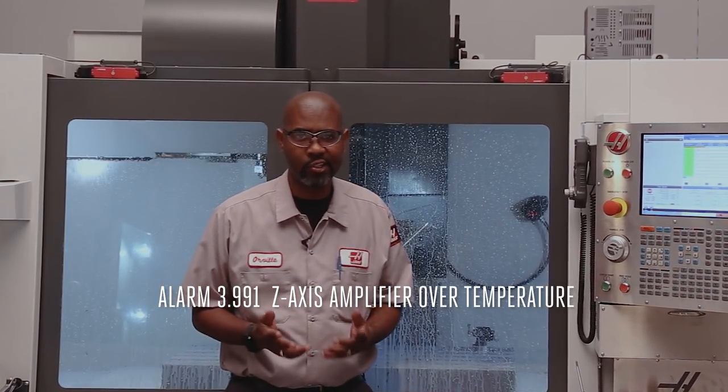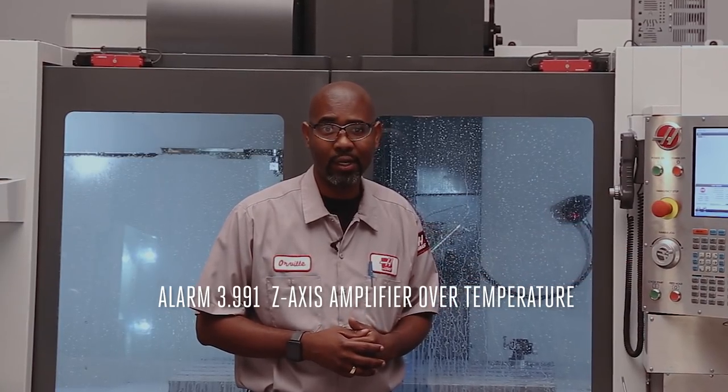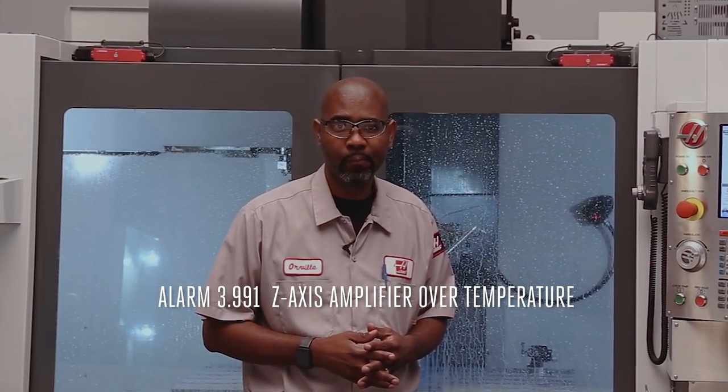If you're running a job on your next-gen mill and you get an alarm 3.991 z-axis over temperature, here are some steps you can take to fix it.